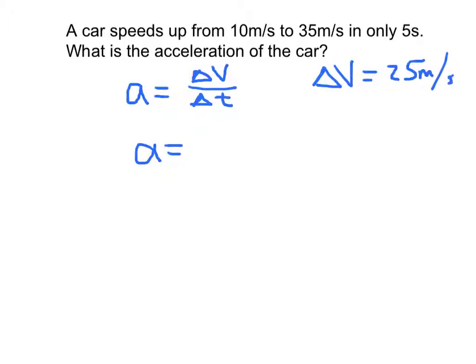Now how much time did this take? Well, we see this happens in only 5 seconds. So our change in time, or our time interval, is only 5 seconds. So now we have our two variables and we can simply put those variables in the proper place here. So we have 25 meters for every second divided by our 5 seconds.